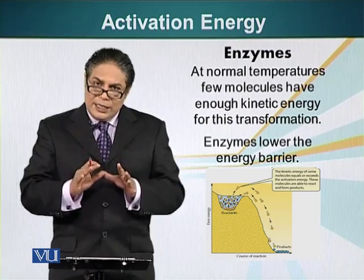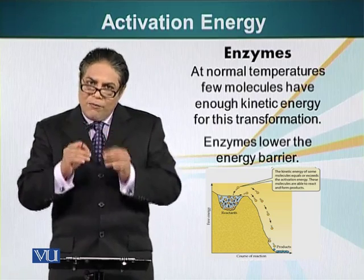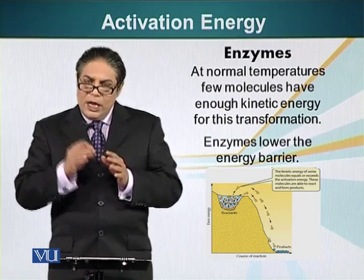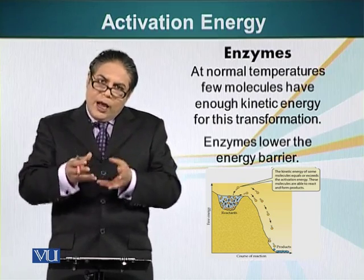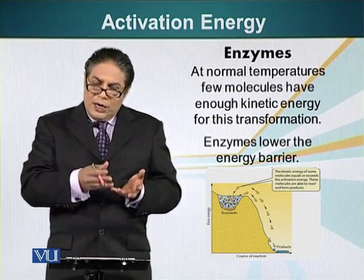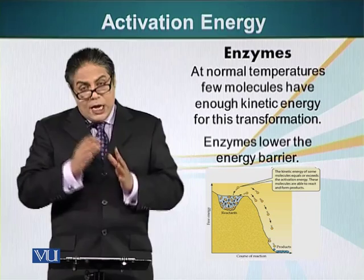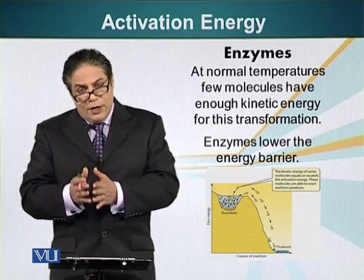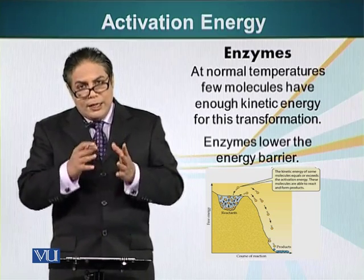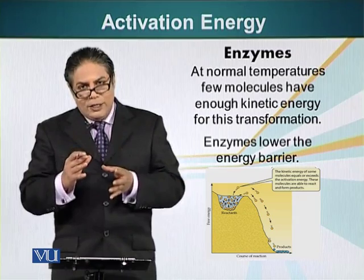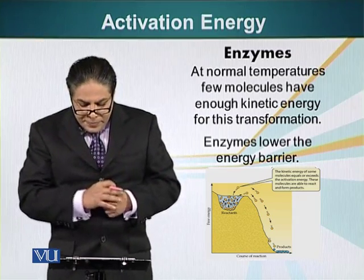At 25 degrees Celsius, some molecules had enough kinetic energy and they could use that kinetic energy to attain a higher energy state — which was glucose 1-phosphate — so their kinetic energy was converting into potential energy in the form of the high energy bond of glucose 1-phosphate.